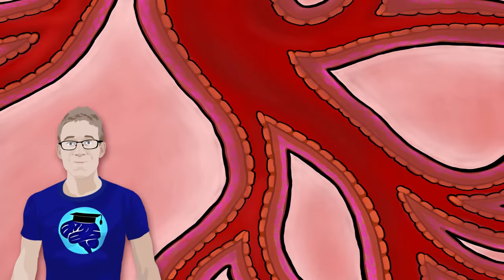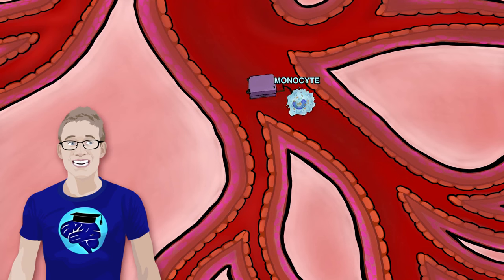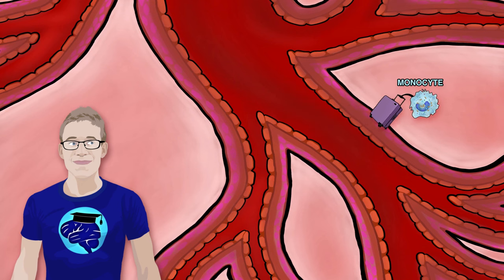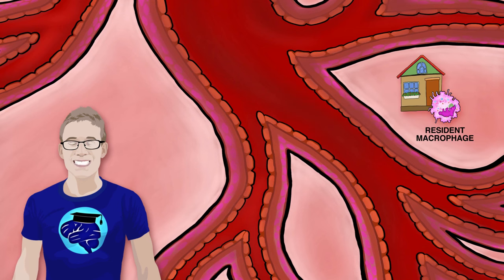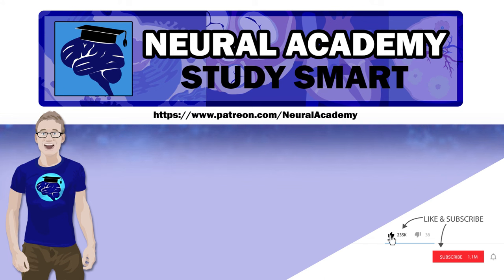Note that even in uninfected regions of the body, circulating monocytes are continuously leaving the blood and entering tissues, where they become resident macrophages. They do so by adhering to ICAM-2, which is expressed at low levels by unactivated endothelium.